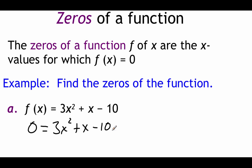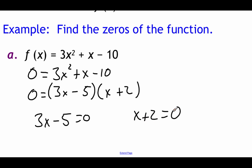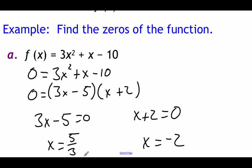This one is quadratic, so you could use the quadratic formula, but I know this one factors. To get 3x², we need a 3x and a plain x. Doing a little guess and check with the negative 10 and the plus x in the middle, we get: 0 = (3x - 5)(x + 2). Setting each factor equal to zero: 3x - 5 = 0 and x + 2 = 0. From x + 2 = 0, we get x = -2. From 3x - 5 = 0, we add 5 and divide by 3 to get x = 5/3.